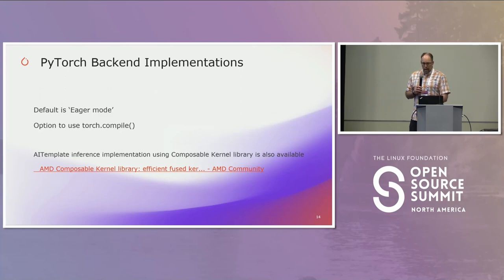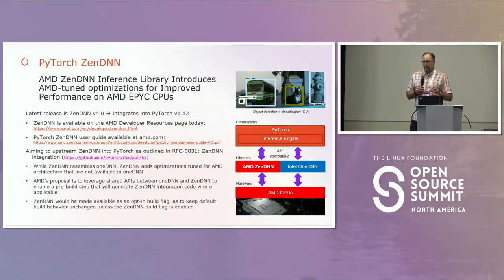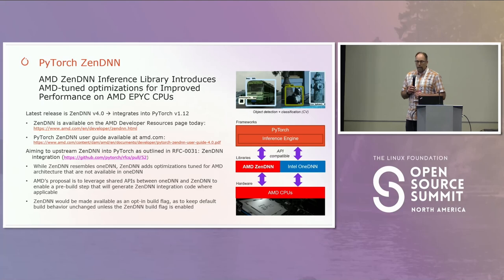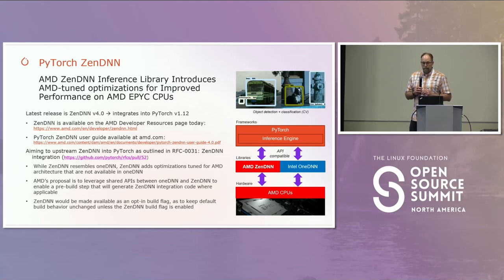Next up is the Zen devices — the EPYC and other CPU infrastructure. ZenDNN is very similar to oneDNN, as you can tell from the diagram, and is mostly used for inference. We are working towards upstreaming it into the main PyTorch repository. It looks at exact CPU codes and creates optimized kernels for our hardware.